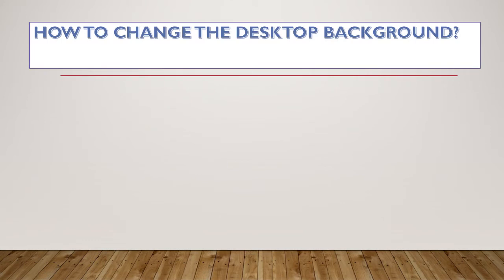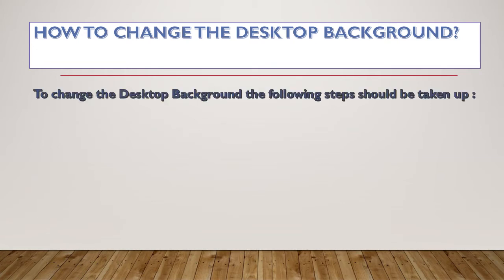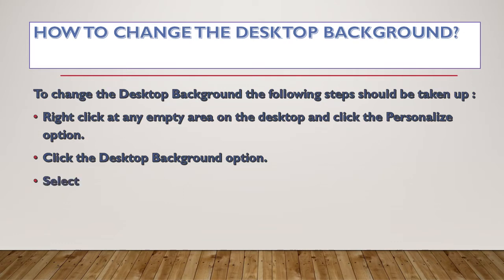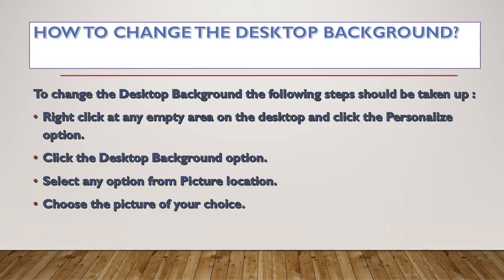Now the question arises: how can we change the desktop background? The steps to change the desktop background are as follows. Step one: right-click at any empty area on the desktop and click the Personalize option. Step two: click the Desktop Background option, select any option from the picture location, choose the picture of your own choice, and click the Save Changes button. In this manner we can easily change the desktop background.